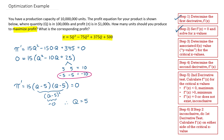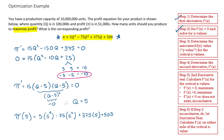Now I'm going to find the associated profit value for that q value. Profit when q equals 5 is: 5 times 5 cubed minus 75 times 5 squared plus 375 times 5 plus 500 — substituting 5 into the equation. This gives me 1,125. So I have a critical point at (5, 1125). Step 3 is done.